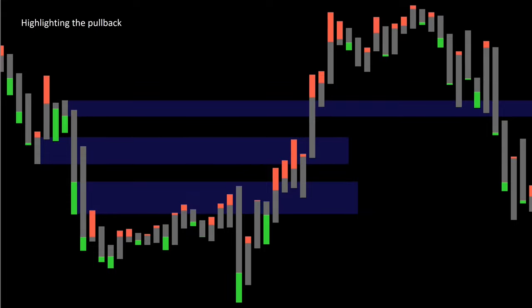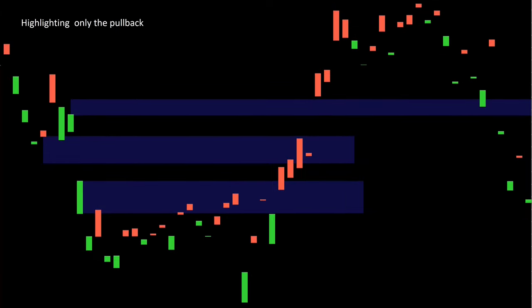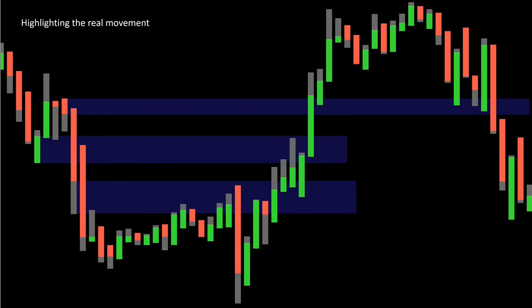Here we see again a normal candle display compared to the bionic candle. The colors and the width are of course individually adjustable: here the candle body is grey and the pullbacks are highlighted; here only the pullbacks are shown; here the pullbacks are grey and the candle body is highlighted; and at the end we see the pure direction of movement.